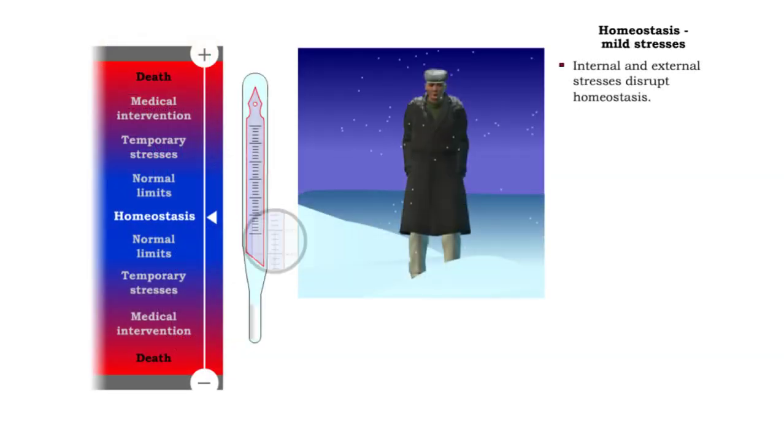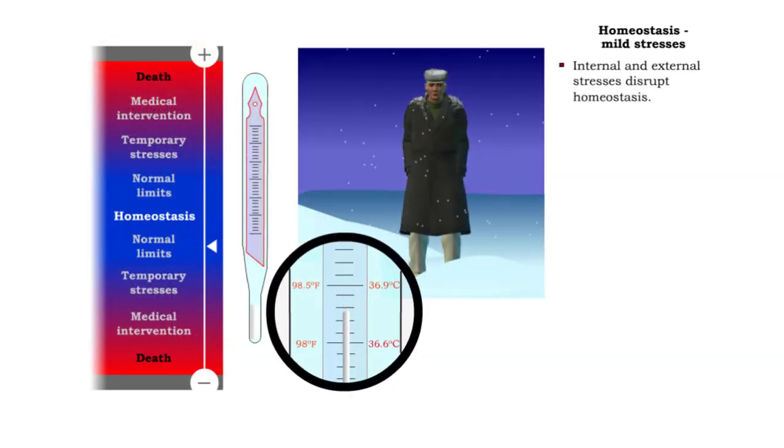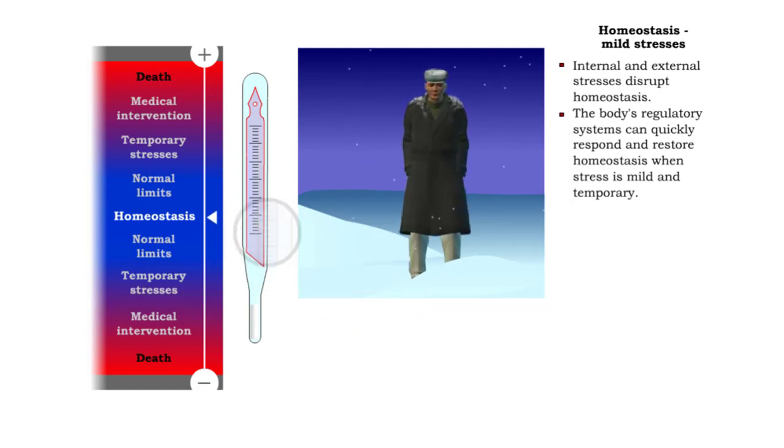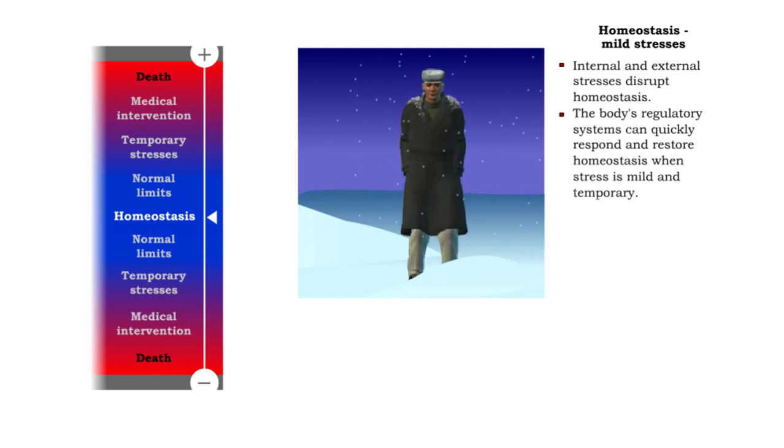Stresses from both external and internal environments can move body conditions away from normal limits. When stress on homeostasis is mild and temporary, the responses of the body cells quickly restore balance in the internal environment. Shivering is one of the body's responses to adjust body temperature back to normal ranges.